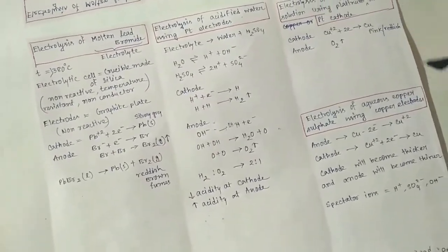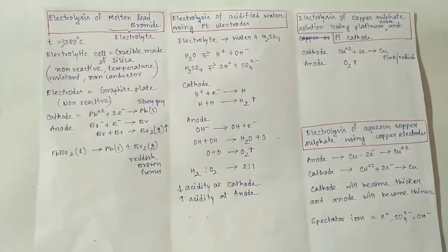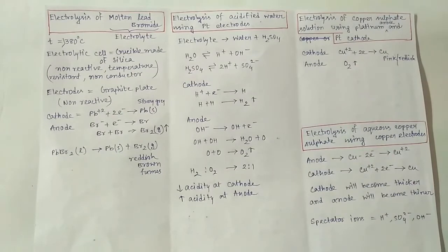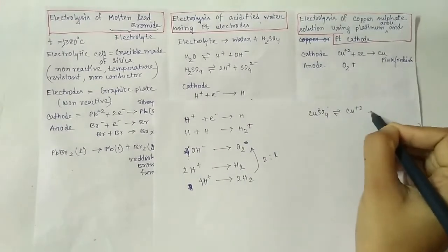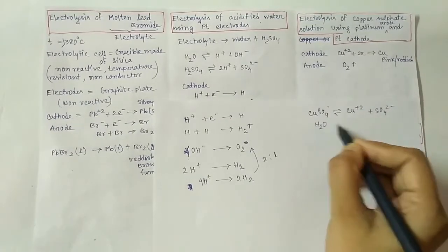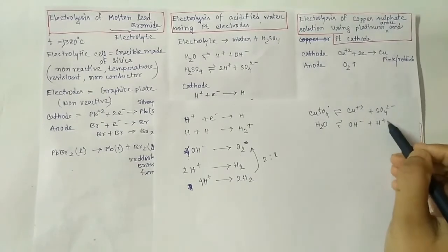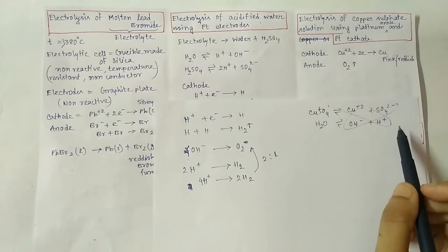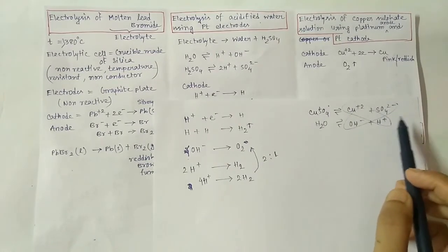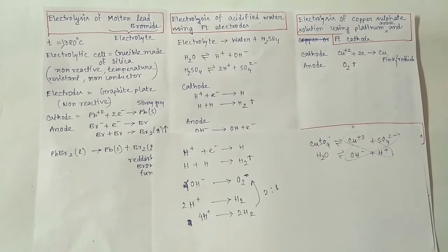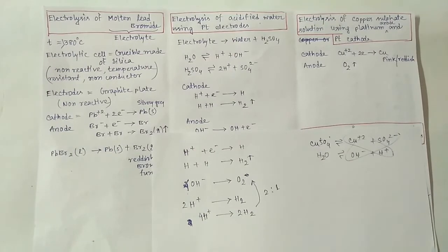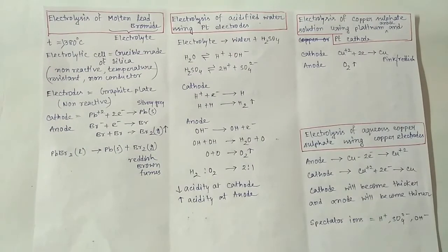Next: electrolysis of copper sulfate solution using platinum anode and platinum cathode. We use platinum electrodes because they are non-reactive. CuSO4 dissociates to produce Cu2+ and SO4 2-, and water dissociates to produce H+ and OH-. So there are two cations and two anions. Cations move to the cathode, where Cu2+ gets preference and copper metal is deposited. At the anode, OH- gets preference over SO4 2- and oxygen gas is emitted.